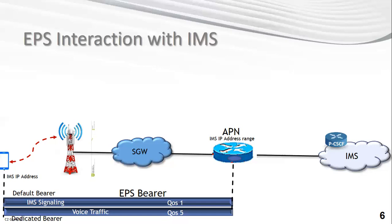Once the person has created their bearer and knows where to send signaling messages via the default bearer, they initiate a call. The network then gives an order to initiate another EPS bearer called the dedicated bearer. This bearer transfers media traffic from the user to the IMS network and then to the other user. The dedicated bearer has Quality of Service number five, which has a different priority, specific packet loss and delay parameters, and is more dedicated than the default bearer. Its main function is carrying user or media traffic with special characteristics.